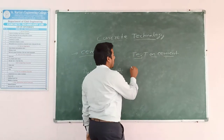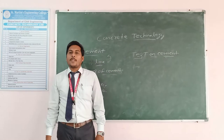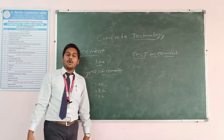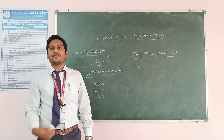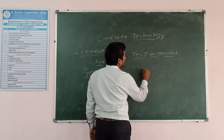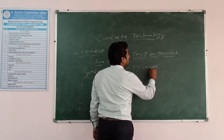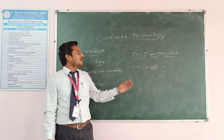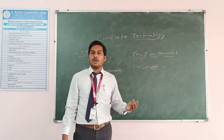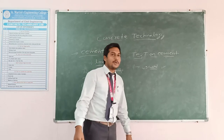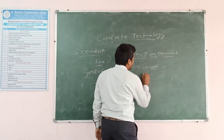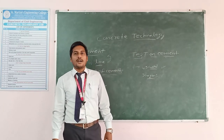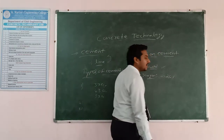For the test on cement, the first one is consistency of cement. In consistency of cement, we are finding how much water percentage we are using for the cement. For example, we are taking 43 grade cement. In this 43 grade cement, how much water percentage we are taking — that is what we calibrate as the normal consistency of cement. First of all, we are taking 300 grams of cement, and we start from 26 percent of water.